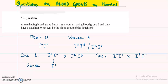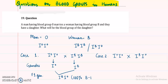In case one, the man produces only the gamete IO, and the woman produces only the gamete IB. So the F1 generation will be IBIO. Remember, when writing genotype, the dominant allele is written first — B is dominant over O, so we write B first. In this case, 100% of offspring will be blood group B.